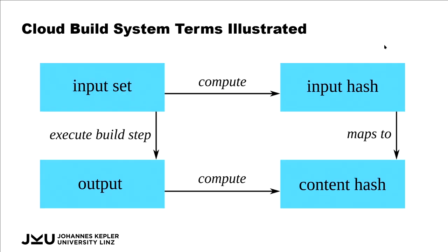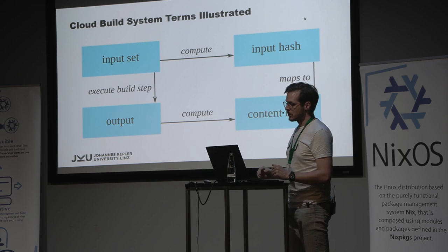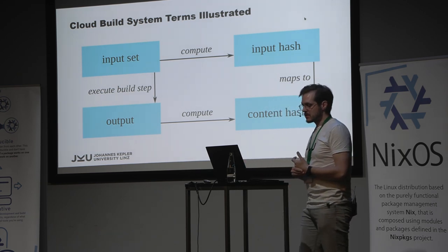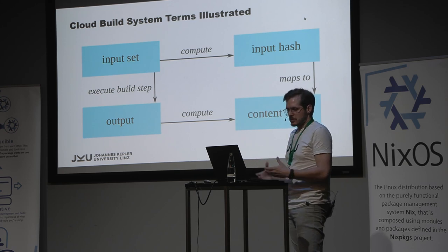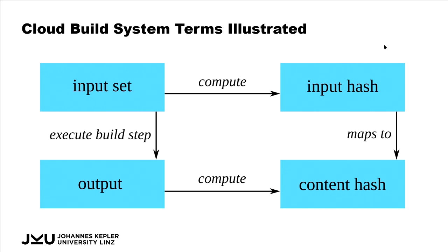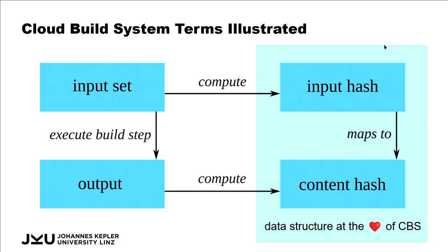In order to get away from the slide with many words on it, let's look at this again with a nice picture. We have our input set, and there are two things we can do with it: we can either compute an input hash from that input set, or we can execute it to execute the build step and obtain some output. This output, we can again compute a hash from because it's just some binary data — and that again would be a content hash. The left-hand side of this slide is this interesting data structure: it's a hash of the inputs together with the hash of the outputs, and that's really at the core of cloud build systems.